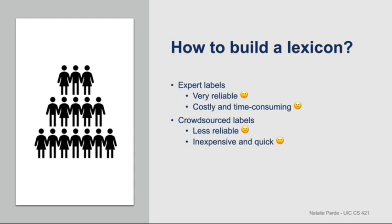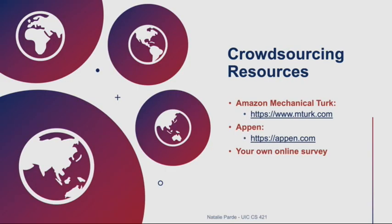Despite these shortcomings, using crowd workers to create annotated datasets is extremely popular in natural language processing, primarily because it tends to be very inexpensive relative to recruiting experts, and it's also much quicker. An extremely popular resource for building crowdsourced datasets is Amazon Mechanical Turk. In Amazon Mechanical Turk, you can set up small, easily digestible tasks called HITs, which is short for Human Intelligence Tasks. You offer to pay a nominal fee for each short HIT, and then you make it publicly available. Amazon Mechanical Turk charges a small additional fee for each HIT.